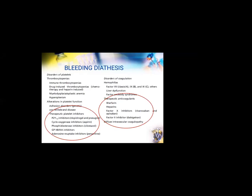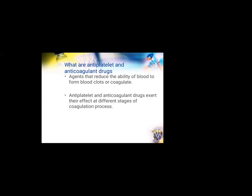Coming to the conditions where we will encounter bleeding, there are a variety of conditions such as disorders of platelets, thrombocytopenias, disorders of coagulation such as hemophilia, liver dysfunctions, and alteration in platelet functions such as von Willebrand disease. Today, mainly what we will focus upon is the use of therapeutic antiplatelets and therapeutic anticoagulants. The therapeutic anticoagulants we commonly come across in dental practice are warfarin and heparin. These drugs basically reduce the ability of the blood to form clots. They exert their effect at different stages of the coagulation process — that is why we had a small overview of hemostasis.